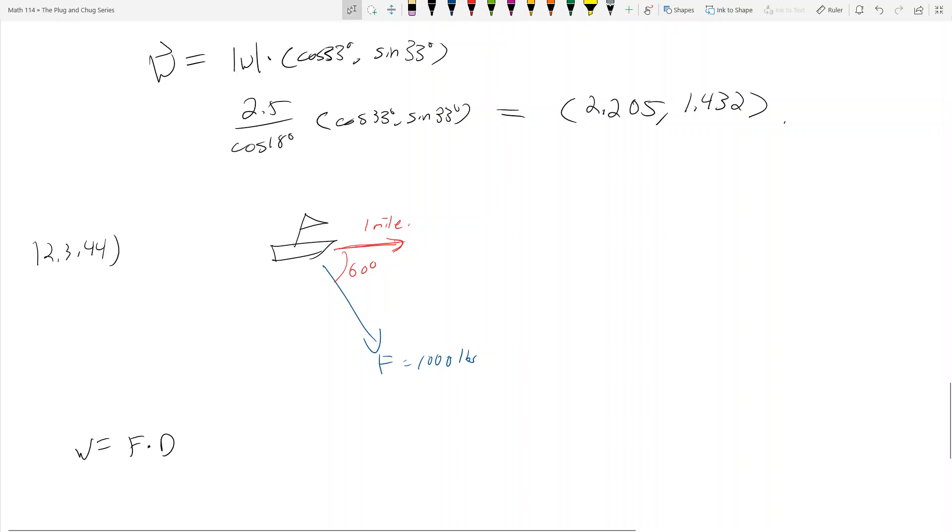So work is equal to force dot distance. The goal of this problem is to find how much work does the wind perform when I go straight for one mile.